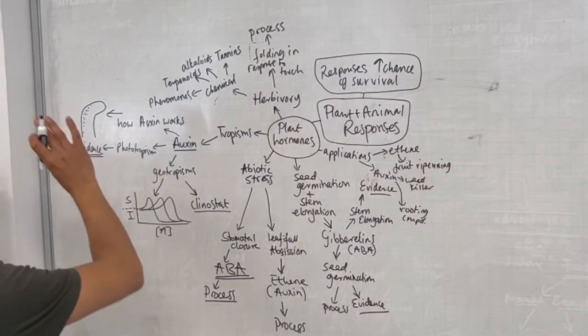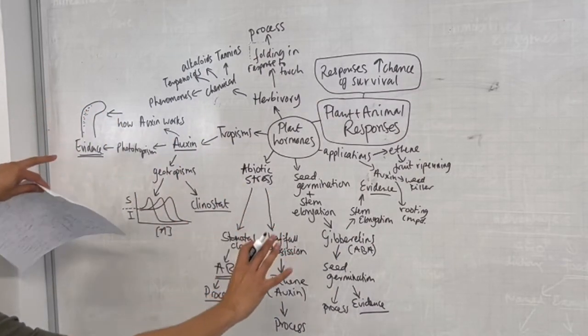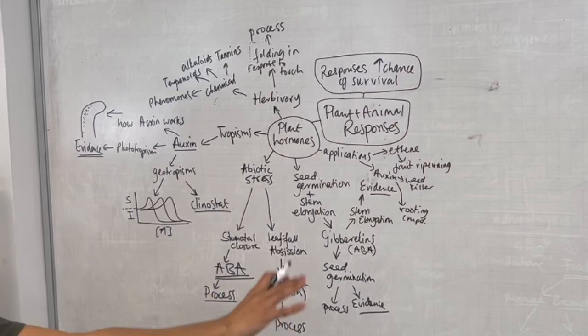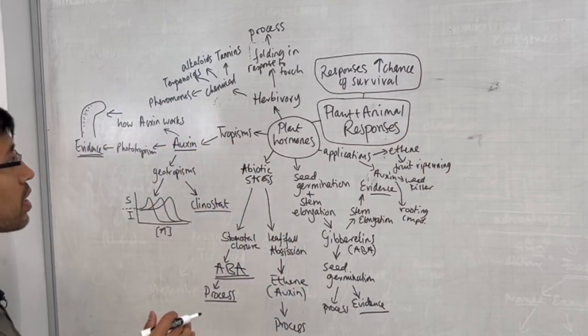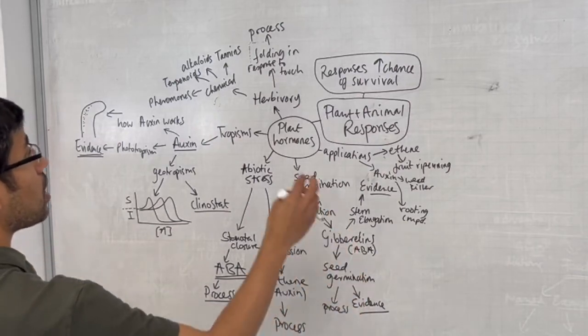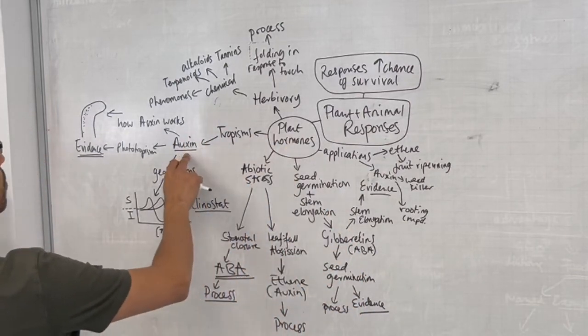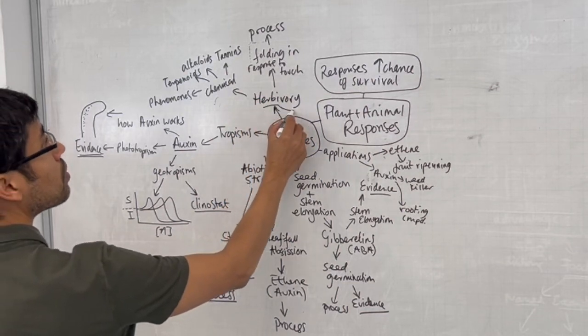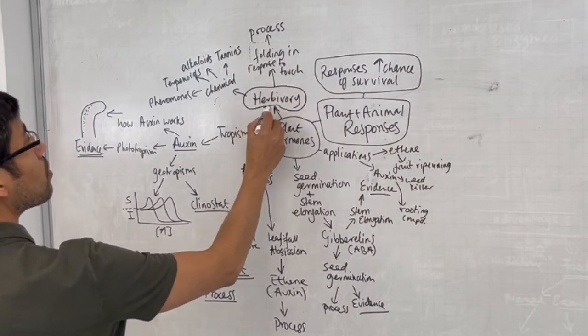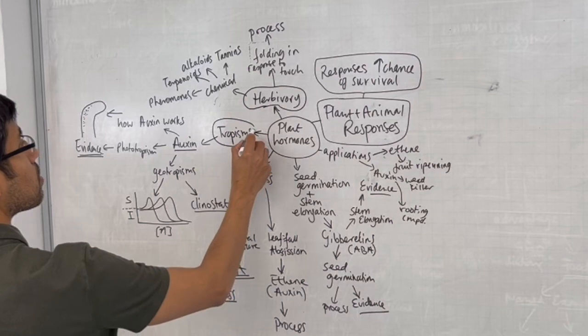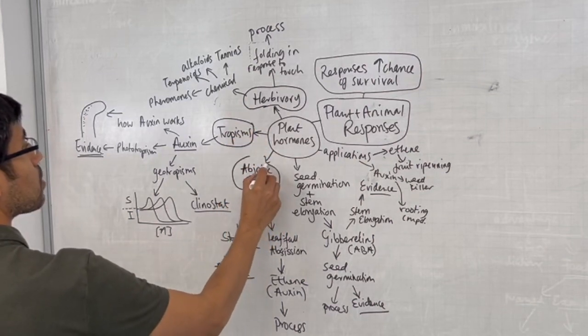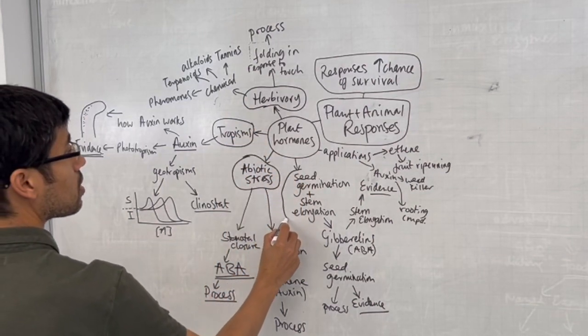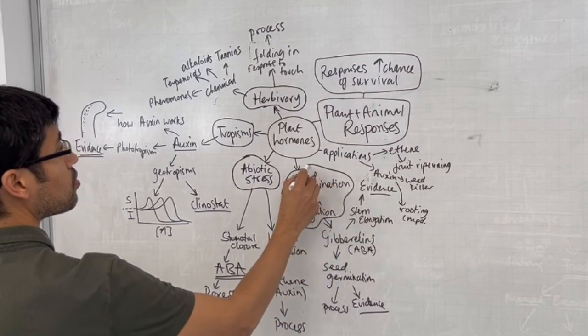There are various different ways you could organize this information. This is just my version of it. You could have looked at each hormone and what it does, but I've tried to group it by the type of response. But there are other ways to do it also.